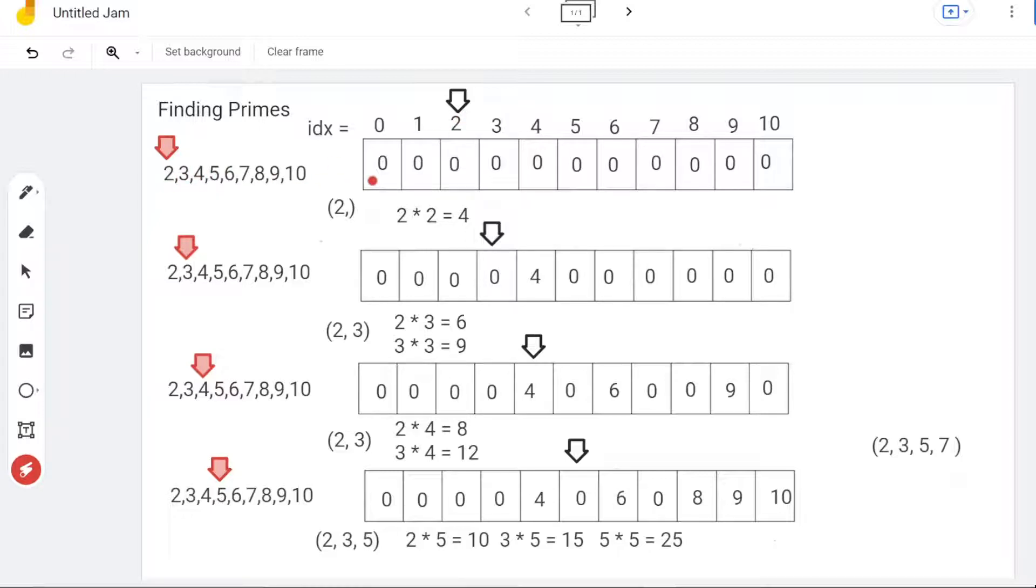For each prime searching, it involves two operations. First, check whether the searching number appears on the location the current index is pointing. If not, it's a prime.